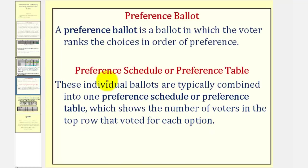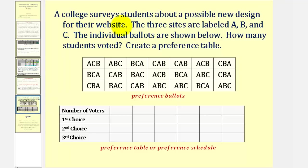Let's take a look at an example. A college surveys students about a possible new design for their website. The three sites are labeled A, B, and C, and the individual ballots are shown below. These ballots here would be called the preference ballots. Notice how the ballots rank the choices from first through third. We're first asked how many students voted — notice how we have three rows of seven.